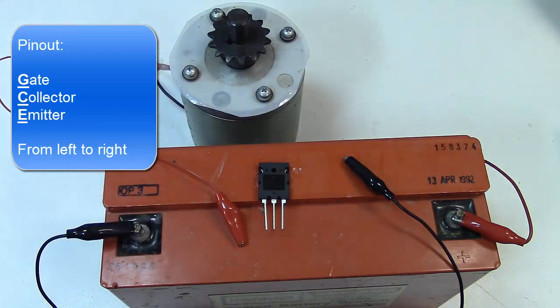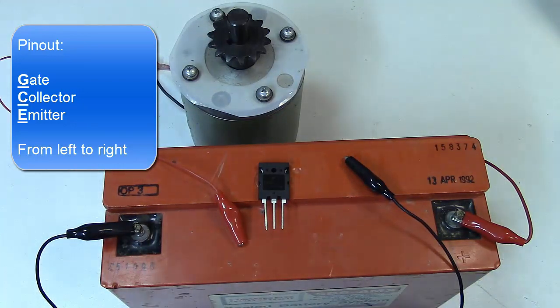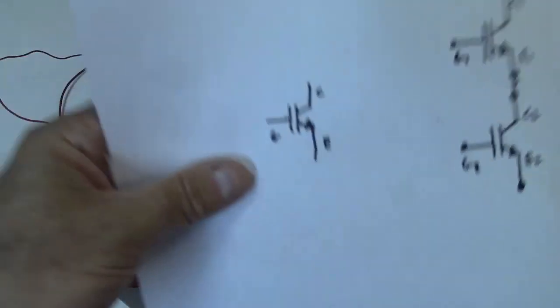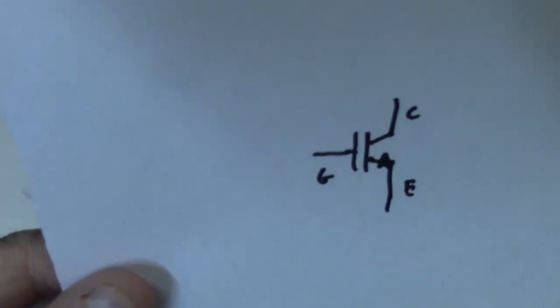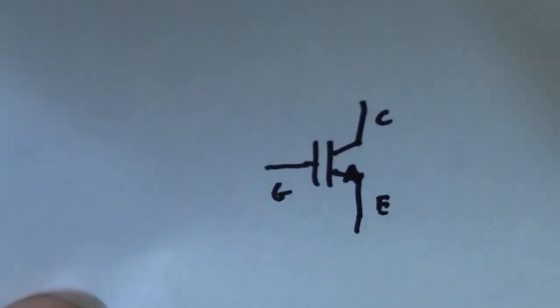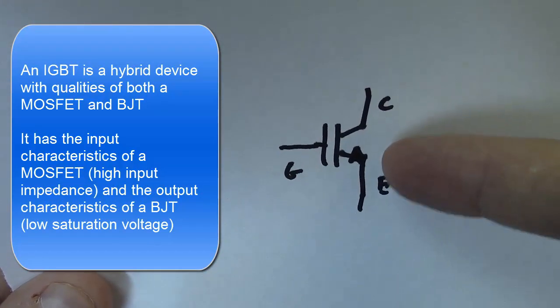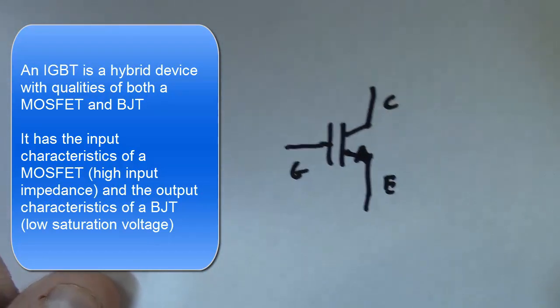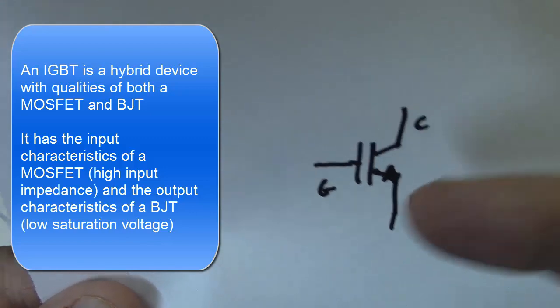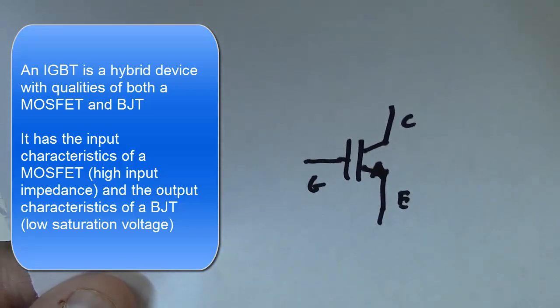And the pin out for the IGBT is gate, collector, emitter. So one strange thing about IGBTs is they are a combination of a MOSFET and a standard bipolar junction transistor.